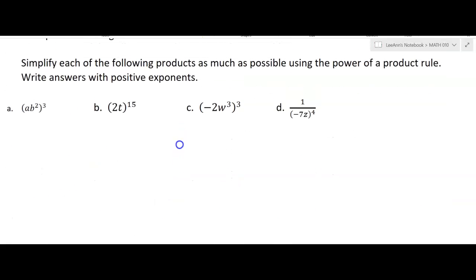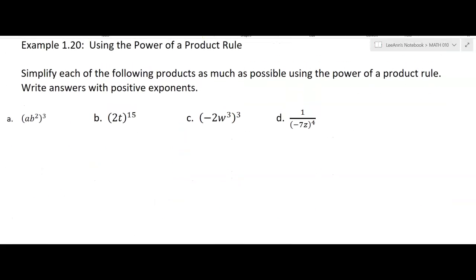All right, so here comes some examples. Simplify each of the following as much as possible using the power of the product rule. Write the answers with positive exponents. Okay, so again, you might want to think of that a as a to the first. So you're going to go three times one for the a, and then three times two for the b. So it's going to be a cubed, b to the sixth.